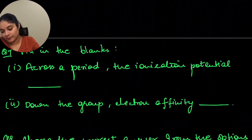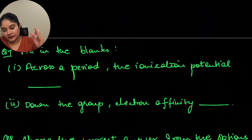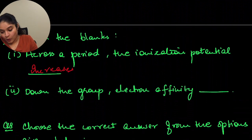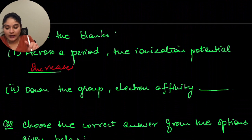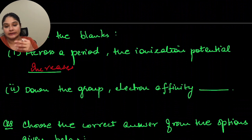Fill in the blanks. Across a period, the ionization potential increases. Down the group, electron affinity decreases. As you are coming down a group, electron affinity decreases.